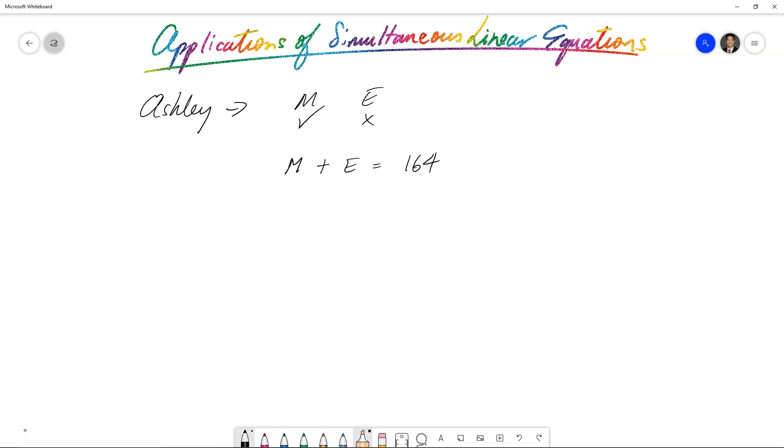The difference is 22. So then if we did M minus E, so maths take away the English score, there's going to be 22 marks the difference, because maths is done better and English not so well. And there's our two expressions.